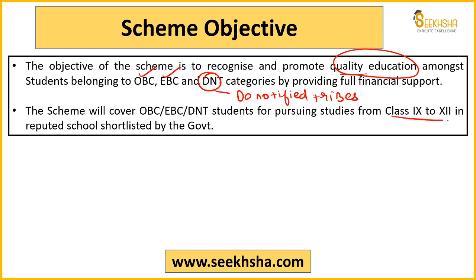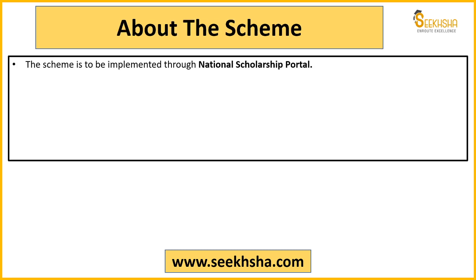This scheme provides scholarship and financial help to students from Class 9 to Class 12 who are studying in or seeking admission to government-shortlisted schools. So remember: OBC, EBC, DNT are the communities covered, and Class 9 to 12 is the target student range.